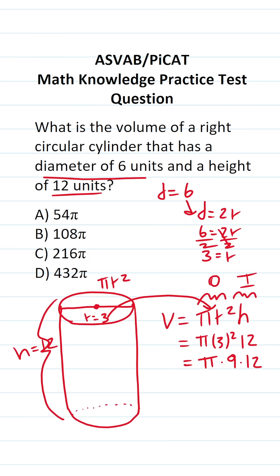What is nine times 12? If you can't do that mentally, do it off to the side. We have 12 times nine. Nine times two is 18. Bring down an eight carry a one. Nine times one is nine plus one is 10. So this becomes 108 pi.